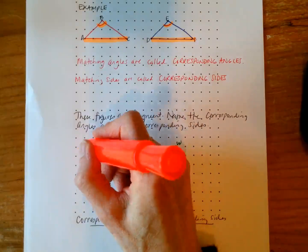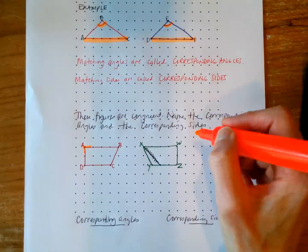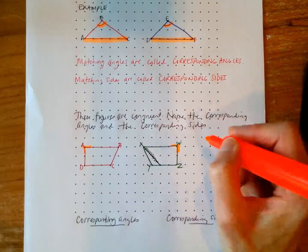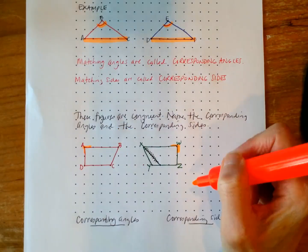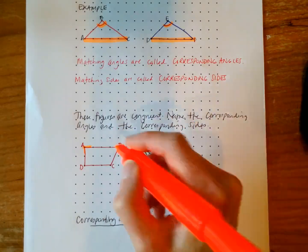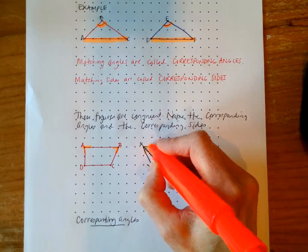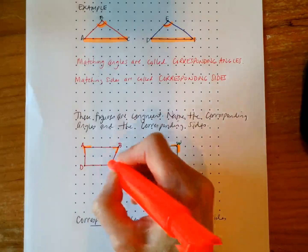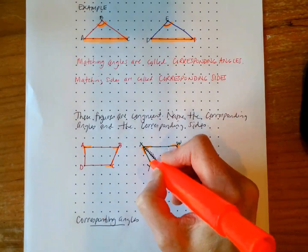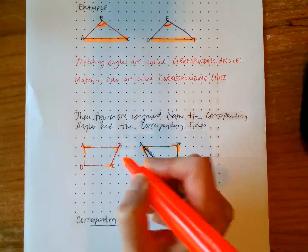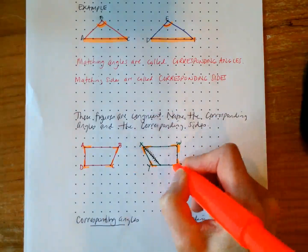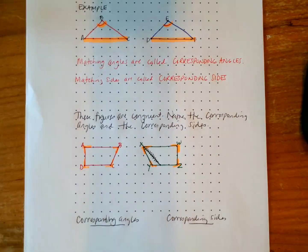So if we were going to be identifying the corresponding angles, we would see that angle A corresponds with angle W. So we've got the 90 degree angle here in the same place. B corresponds with X here. C would correspond with Y. And D would correspond with Z. So those would be our corresponding angles.